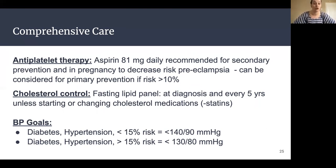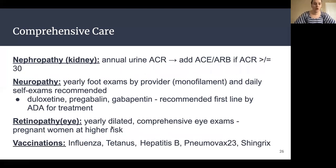That's a good conversation to have with your doctor or pharmacist. For cholesterol control, we want to get a fasting lipid panel when you're first diagnosed with diabetes, and then every five years after that unless we start or change your cholesterol medication, in which case more frequent monitoring is needed. For blood pressure, we want to make sure it's controlled — goals are likely less than 130 over 80, or possibly less than 140 over 90 in some cases. For nephropathy — kidney disease — we want to get an annual urine albumin-to-creatinine ratio, which is a urine test your doctor may order.